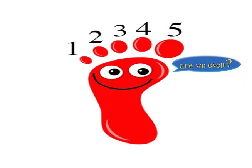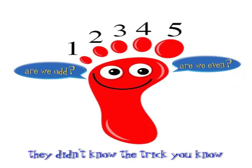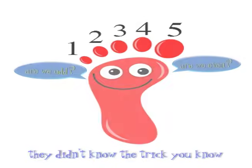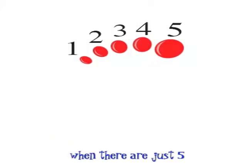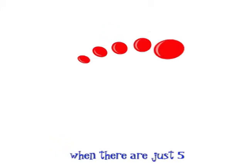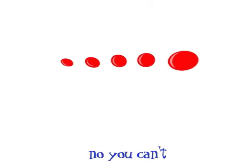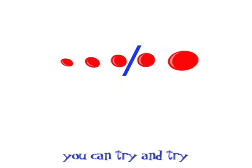Are we even or are we out — as five chubby toes? Are we even or are we out? They didn't know the trick, you know. Can you split them equally when they're all just five? No, you can't split five in half — you can try and try.